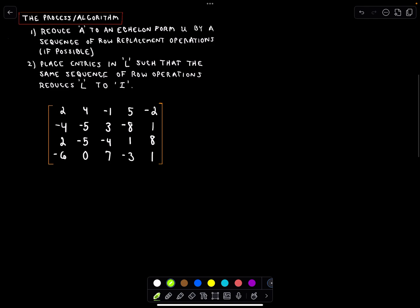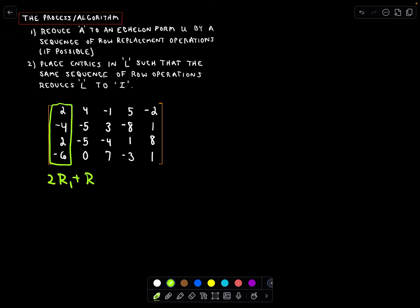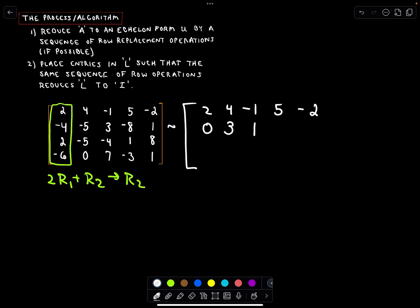I'm going to go through this one a little faster. As we do this, we're going to manipulate this matrix to eventually get our matrix U, and also use it to help produce our matrix L. So the first thing I do is look at this first column. To get it in echelon form, I want to get zeros beneath that top-left entry of 2. It looks like I could take 2 times row 1 and add that to row 2 to get my new row 2. The first row I leave alone: 2, 4, negative 1, 5, and negative 2. So 2 times 2 is 4 minus 4, that leaves 0. 2 times 4 is 8 minus 5, that's 3. 2 times negative 1 is negative 2 plus 3, that's 1. 2 times 5 is 10 minus 8, that's 2. 2 times negative 2 is negative 4 plus 1, that's negative 3.